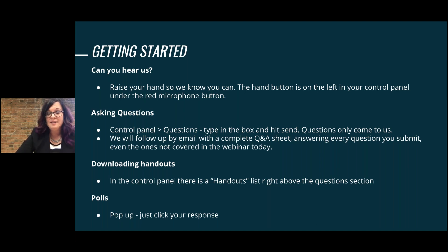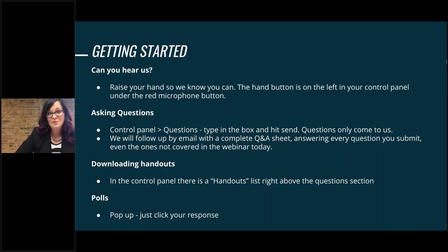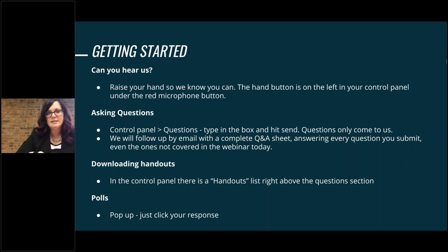We also have a couple of handouts for you today, in the control panel under the handout section — right above the questions section. The handouts include a PDF of this presentation, as well as a bibliography listing all the research studies we referenced, so you can look at the research firsthand. During the presentation we're also going to be doing some polls that will pop up. You can click on the answer and we'll share results live — these are anonymized. At the end, we'll be giving you more detail, and we are sending out continuing education credit certificates after this webinar.